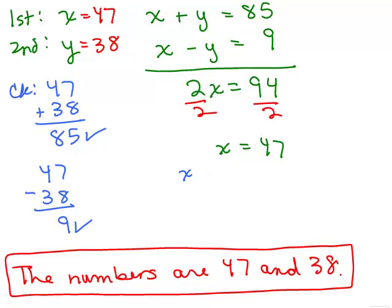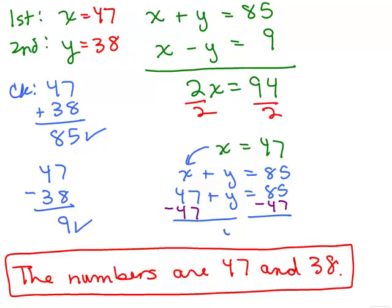So if I take x plus y equals 85, I'm going to plug 47 in for x. I will also get the correct answer here by subtracting 47 from both sides, y equals 38. So remember, it doesn't matter which equation you plug this value back into, it has to be in one of the equations so that you figure out what y is.